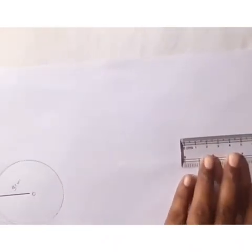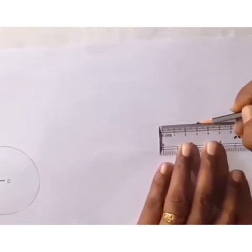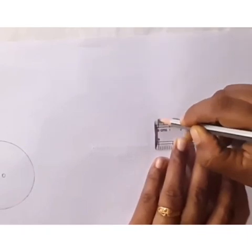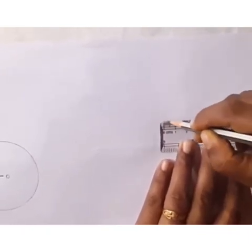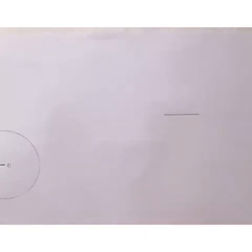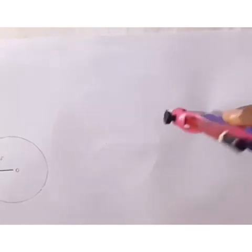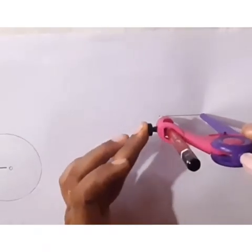Now we'll draw another circle with radius 3 centimeters. First draw a line segment of length 3 centimeters, then take the compass, place the needle at the point, and stretch it to 3 centimeters.